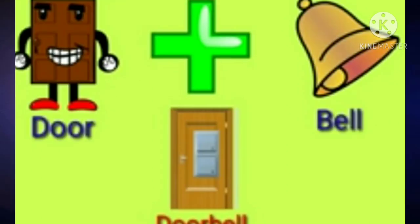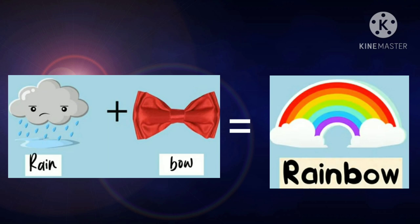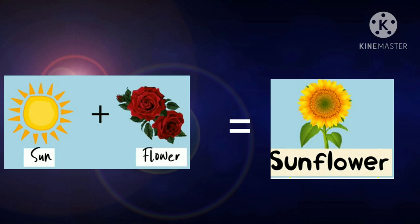Let us see some examples. Sea plus horse equals seahorse — sea and horse combined to form seahorse. Door plus bell is doorbell — door and bell combined to form doorbell. Rain plus bow equals rainbow — rain and bow combine to form rainbow. Sun plus flower equals sunflower — sun and flower combine to form sunflower.